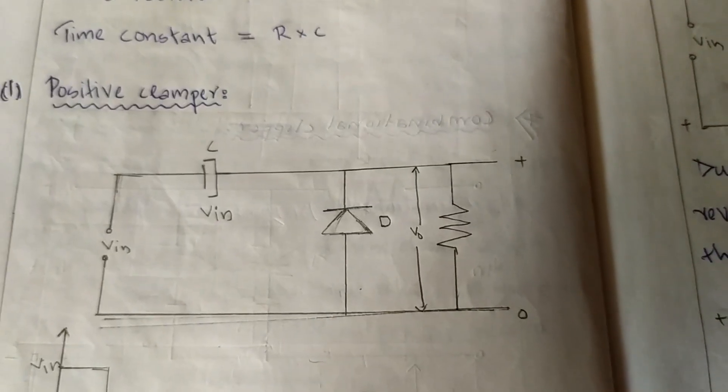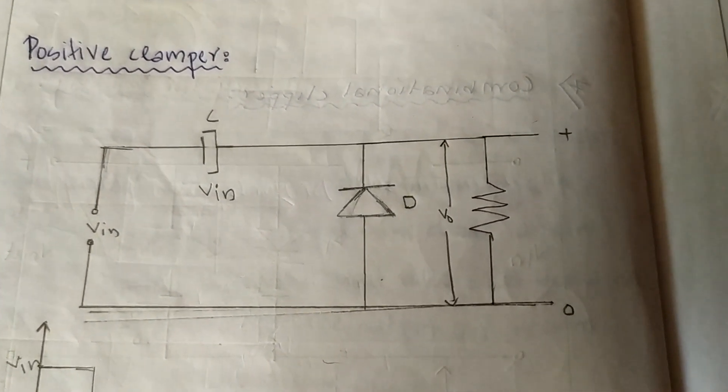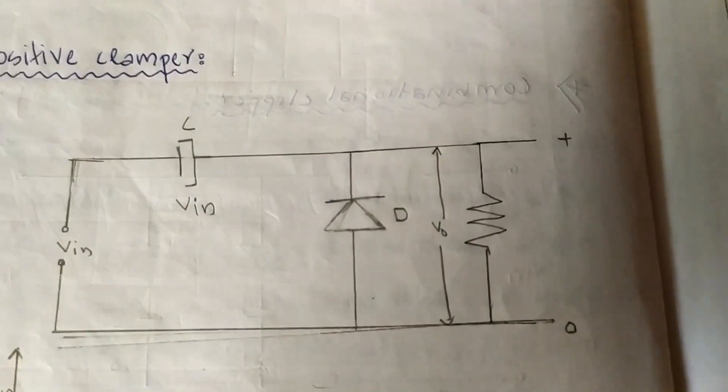This is a positive clamper, a negative clamper, and a bad clamper. This is a positive clamper and a bad clamper. This is a bad clamper. This is a positive clamper.